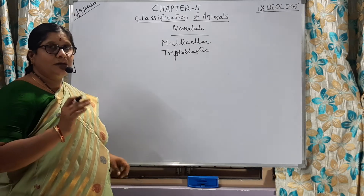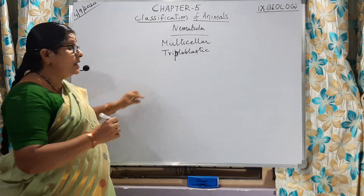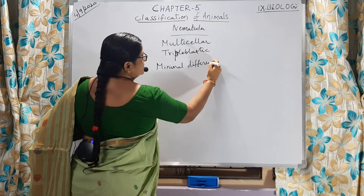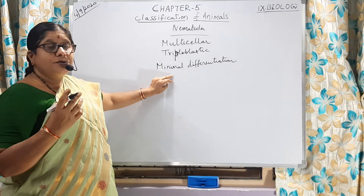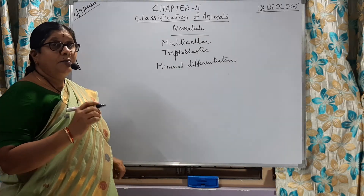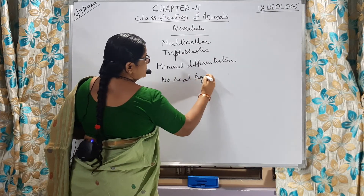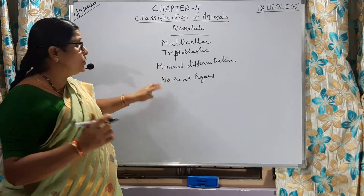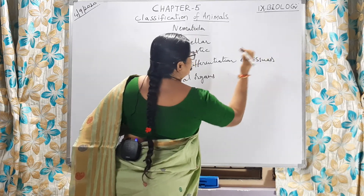Evolutionarily, what development do we observe in the organization of this group? We observe here minimal differentiation, which forms some tissues. Some tissues are formed because of this minimal differentiation. But we are not going to observe real organs — all organs are not clearly developed. Only minimal differentiation of tissues is observed in this group.